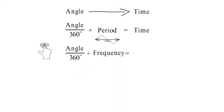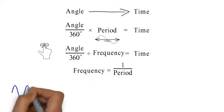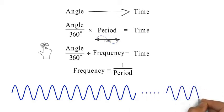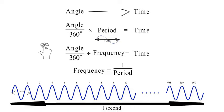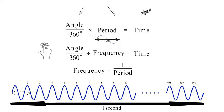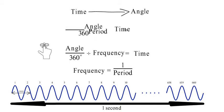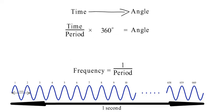After all, what is frequency? It's the number of signal cycles per second — 660 Hz means 660 complete sine wave cycles per second. What if we wanted to go the other way, and convert from the time variable of our signal to the angular variable of a sine wave? In that case, we divide by the period of our signal and multiply by 360 degrees. Alternatively, because we divided by the period, we could simply multiply by the frequency instead. So to convert from time to angle, we multiply by the frequency and then by 360 degrees.